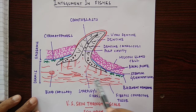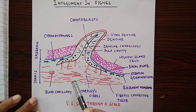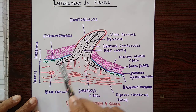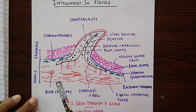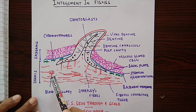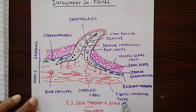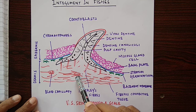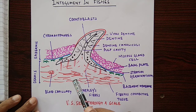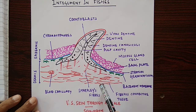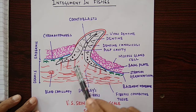The dermis has collagen fibers, nerves, blood vessels, chromatophores, and smooth muscles. Pigment granules impart color to the skin. Blood capillaries supply nutrients and nourish the skin. Nerve fibers make the skin sensitive to external stimuli — this sensitivity is due to the nerves present in the dermis.